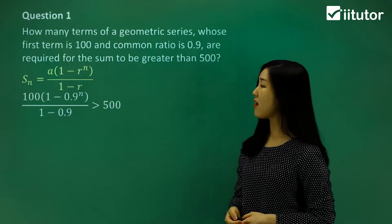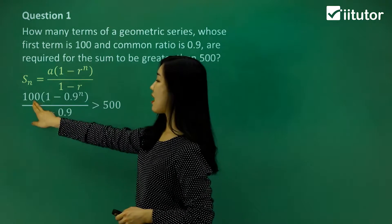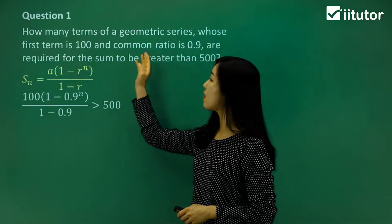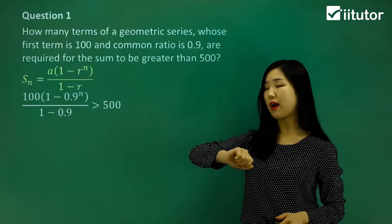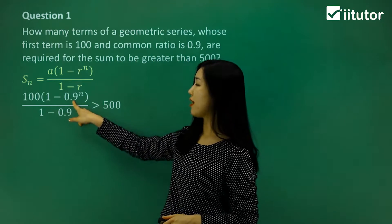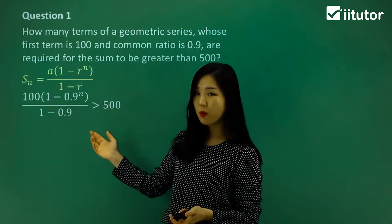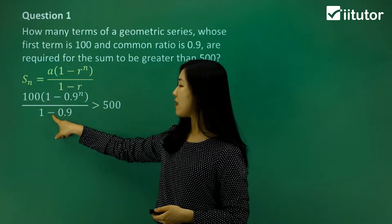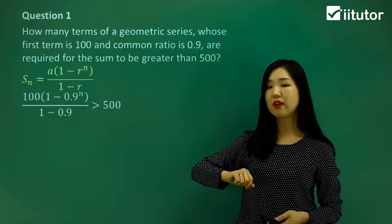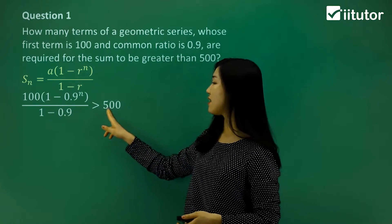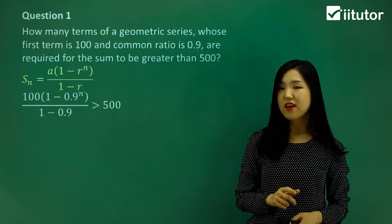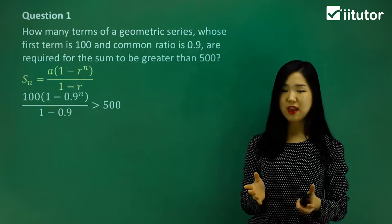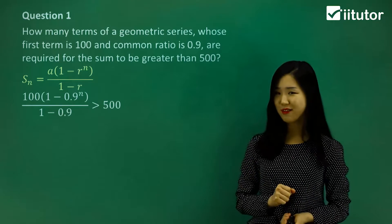We know that our first term is 100, so I've replaced the a with 100. The r, the common ratio, they tell us is 0.9, so I've replaced the r with 0.9. We don't know how many terms there are. That's what we want to find, so I left n as unknown. And I've got 1 minus r, and again, r is 0.9. We want this one to be greater than 500. So let's slowly find our way to get the n. We have to solve for n.